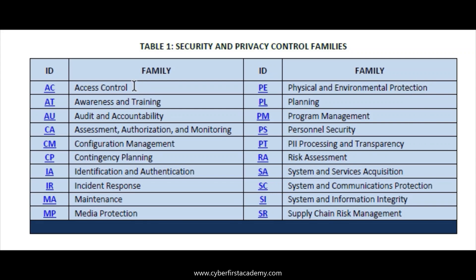Definitely access control — everything begins with access control. How does a person get into the network? How does a person get into the system? How does a virus get into the system? Everything starts from good access control, so you have to know this control family. Also, every control family has a dash-one sub-control, and all the dash-one controls deal with policies and procedures — that's something you should know.